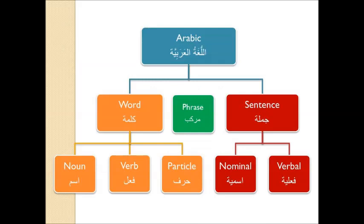The following chart shows us the breakdown of what we have taken so far. At the top you have Arabic (al-lughat al-arabiyah), divided into word (al-kalima), which can also be made into phrases (murakab), and sentence (jumla). Words are divided into ism (the noun), fi'al (the verb), and harf (the particle). And sentences are further divided into jumla ismiya and fi'aliyah — the nominal sentence and the verbal sentence.